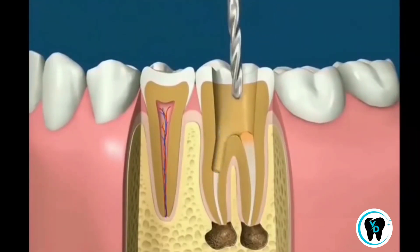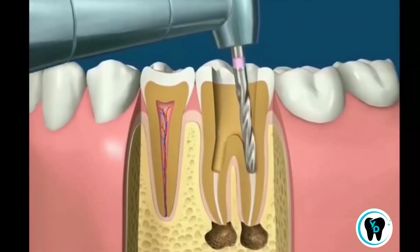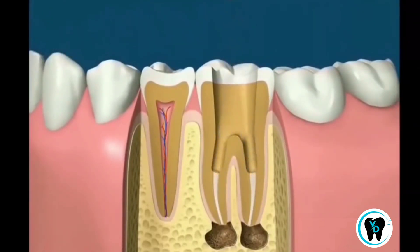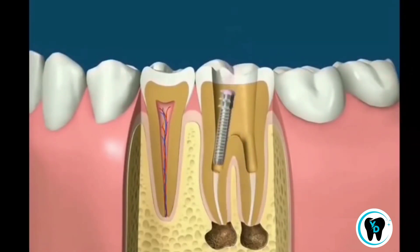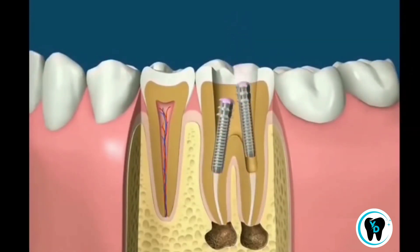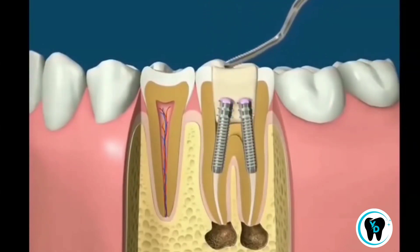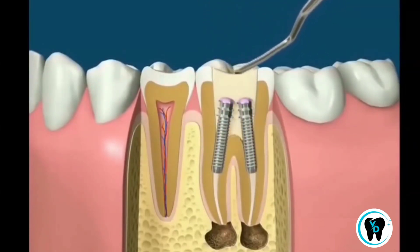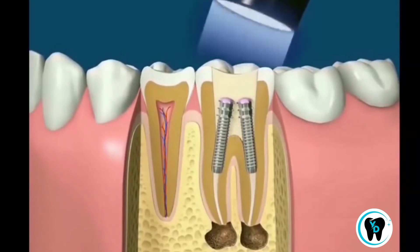One or more posts may be placed to strengthen the tooth and retain the filling. In this case, a light-cured resin is used to fill the space. It's soft when placed in the tooth and hardened with a bright light. At this point the tooth is still in a weakened state and can break with heavy biting.